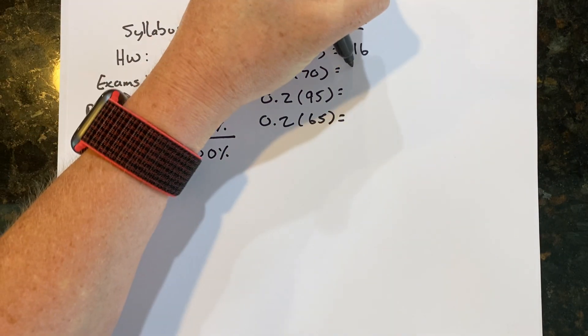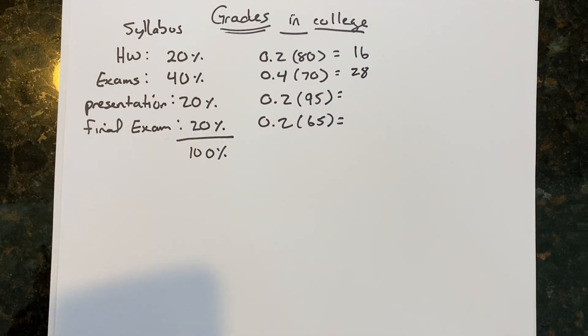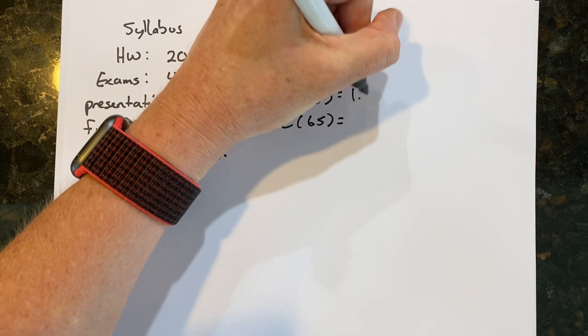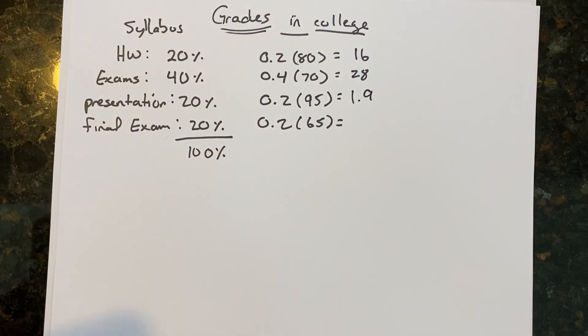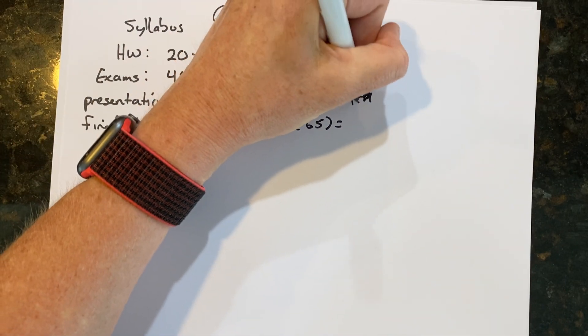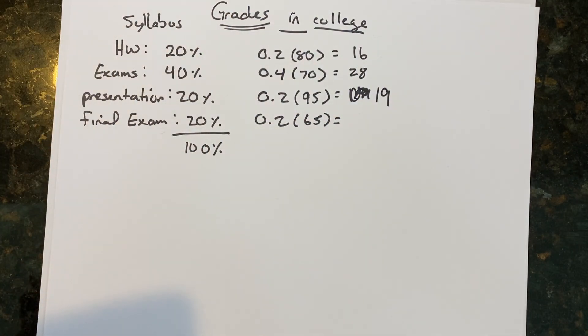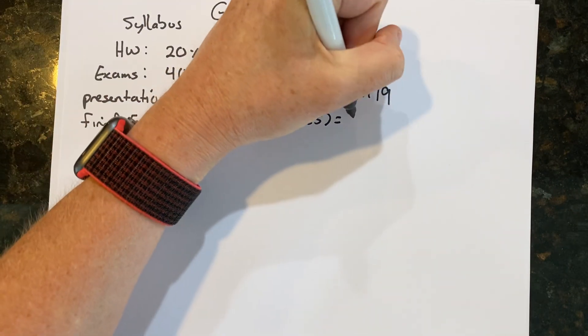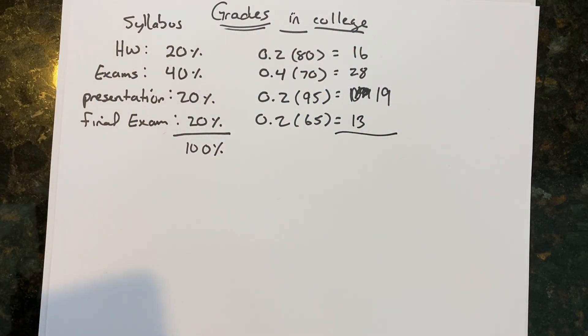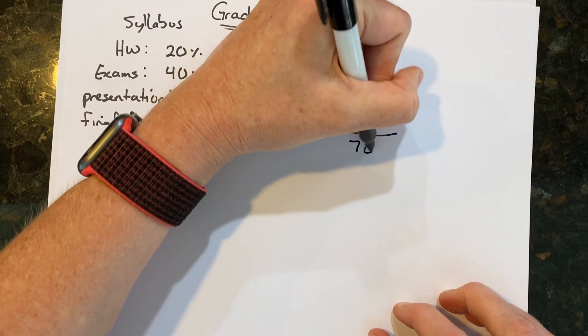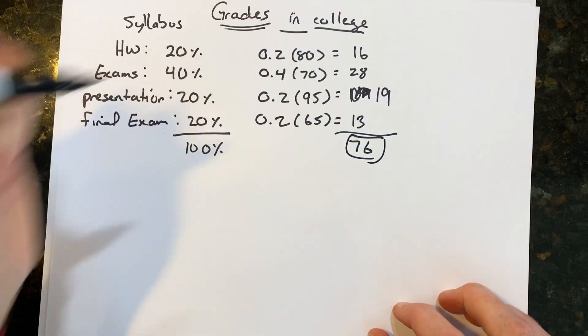Let's go ahead and do it. Obviously it's 16, 0.4 times 70 gives me 28, 0.2 times 95 is 19, and then 0.2 times 65 gives me 13. Let's go ahead and add these up. We got 13 plus 19 plus 28 plus 16, and this gives me 76. So this would be your grade.